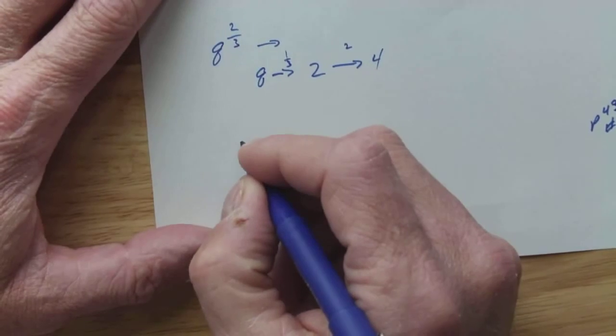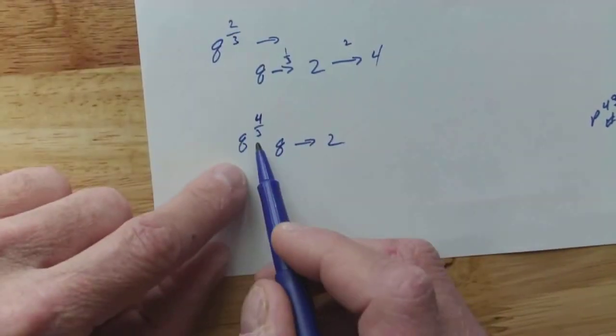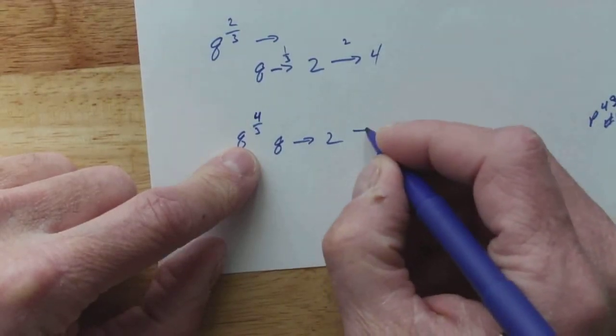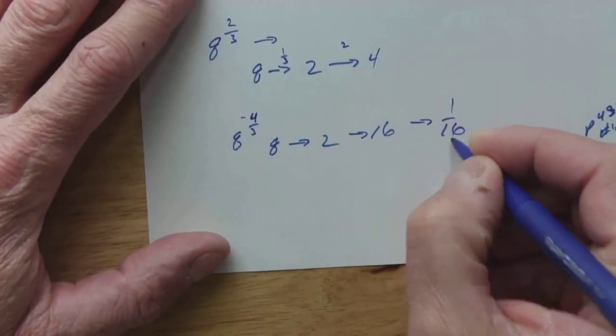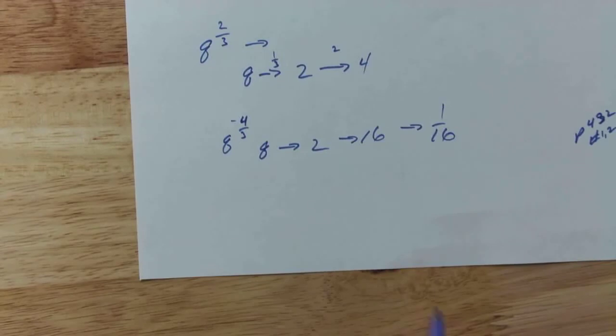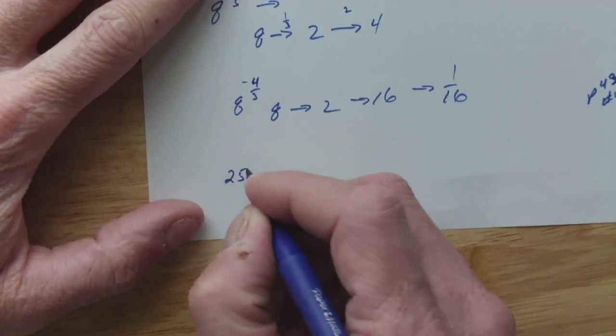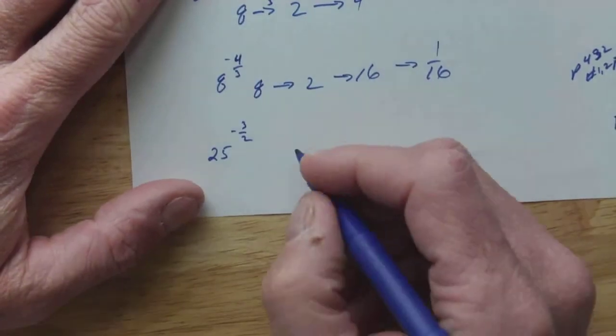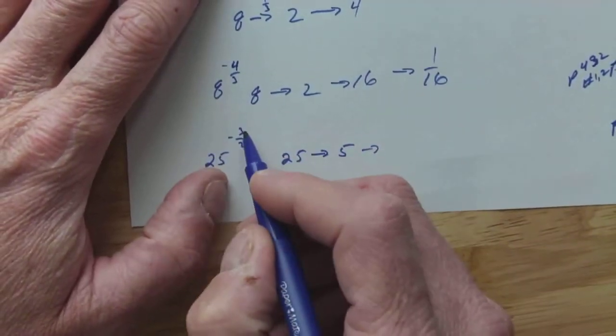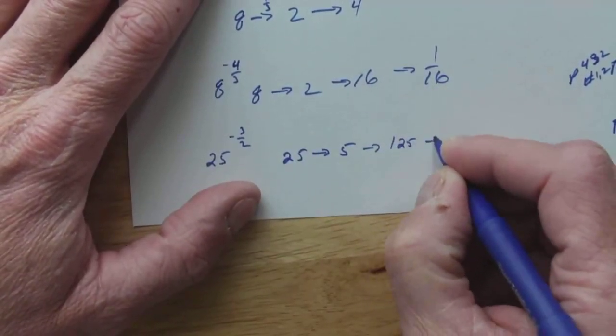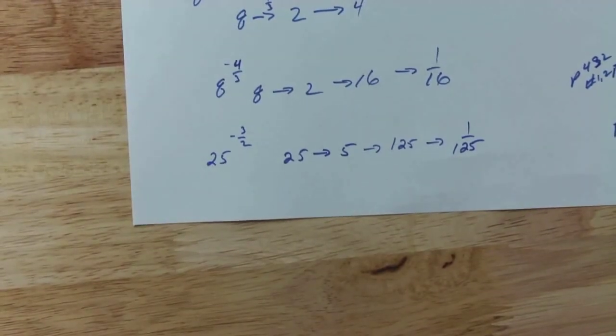So, if I do something like this, 8 to the 4/3rds, well, I'm going to start at 8, I'm going to go down to 2 because I cube root it and I get to 2, and then I'm going to raise it to the 4th power, which gives me to 16. And, let's say if it was negative 4/3rds, then I would just turn that 16 into 1/16th. Root it, power it, flip it if you need to. So, if I did something like this, 25 raised to the negative 3/2, well, here we go. I'm going to start with 25, I'm going to square root it because that's what this means, square root. And then I'm going to cube it, that's what that means, cube it, so I get 125. And then I'm going to flip it because that's what that means, is flip it. 1 over 125.